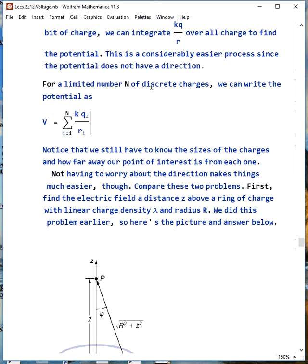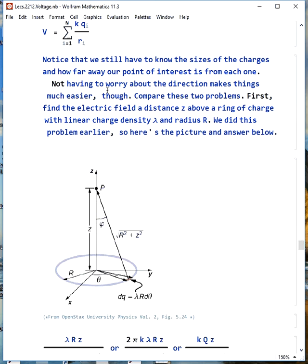If we have a limited number of discrete charges, capital N, we can write the potential as just the sum from i equals 1 to capital N of kqi over ri. Now, we still have to know the sizes of the charges and how far away our point of interest is from each one. Not having to worry about the direction makes life much easier, though.